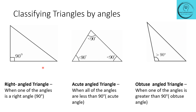Here we are going to see how triangles are classified by their angles. If in a triangle there is at least one angle equal to 90 degrees, it is called a right-angled triangle. If in a triangle all the angles are less than 90 degrees — that is, if they form acute angles in all the corners — they are called an acute-angled triangle. If any one angle is greater than 90 degrees, forming an obtuse angle, the triangle is called an obtuse-angled triangle.